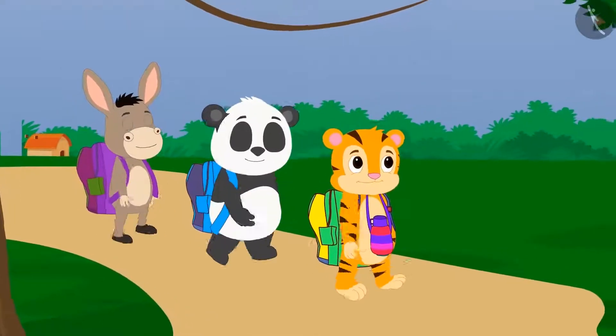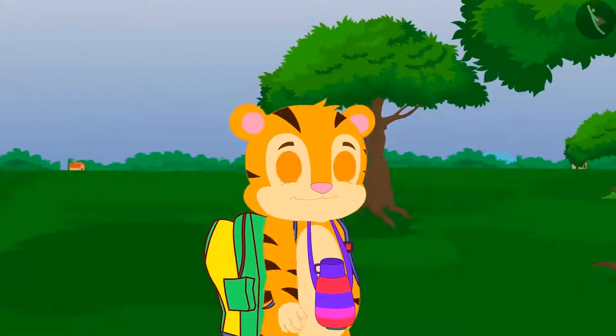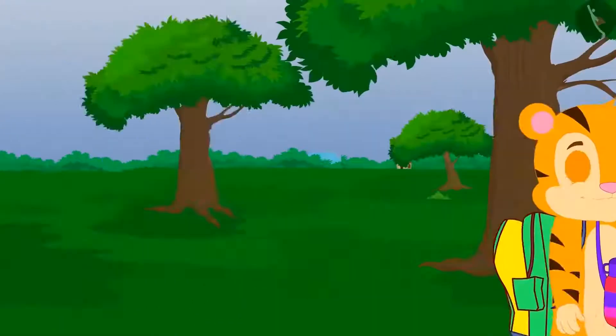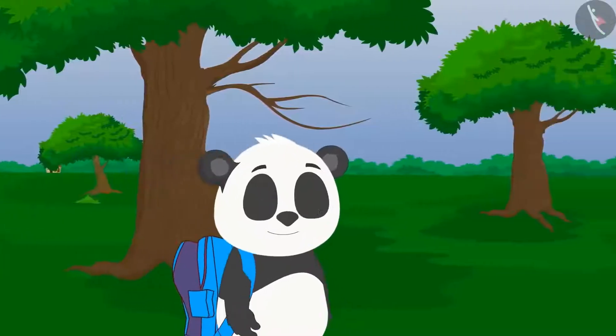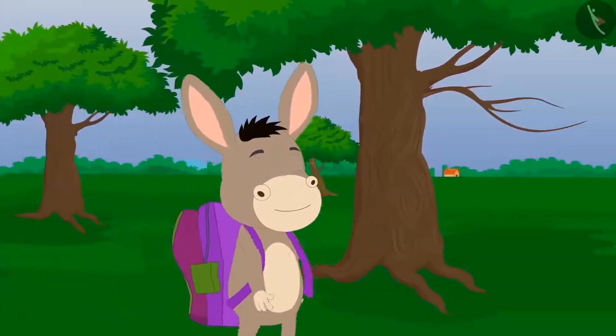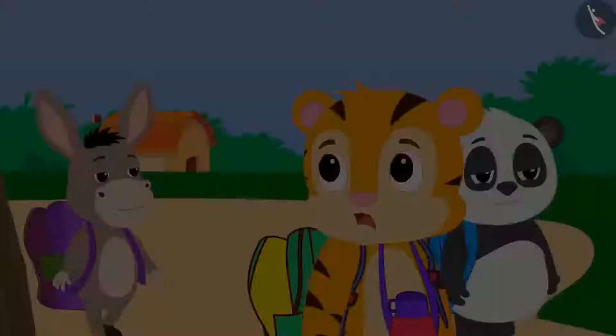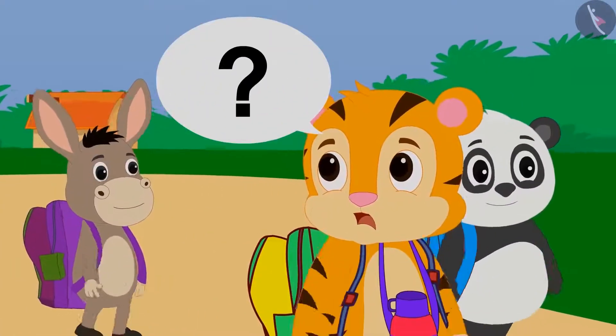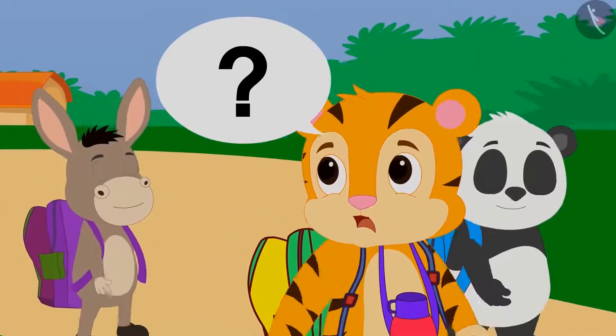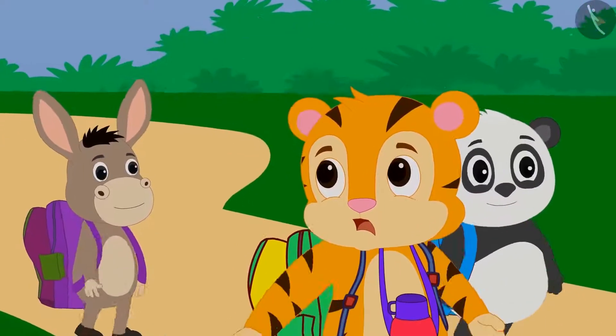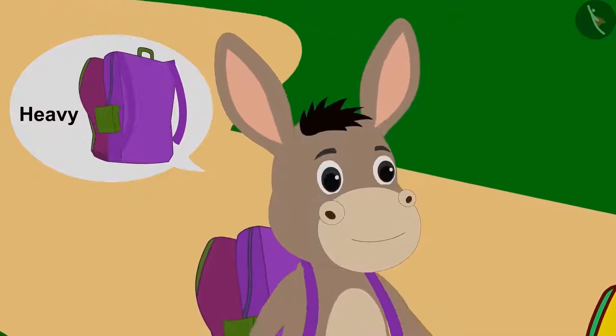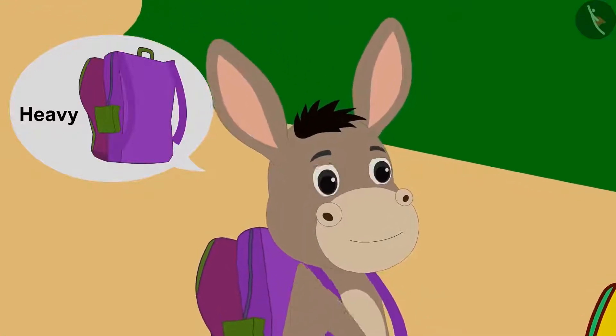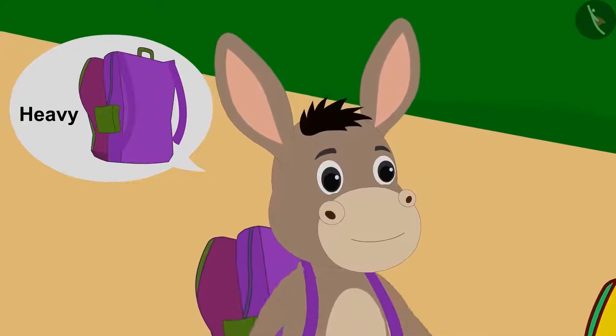Bhoala, Golu, and Sher Khan are returning from school. Sher Khan is walking fast, Golu is a little behind him, and Bhoala is following them both. Sher Khan asks Bhoala why he is moving so slowly. Then Bhoala told him that his bag is the heaviest, so he is moving slowly.